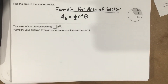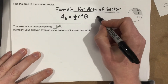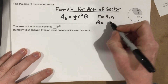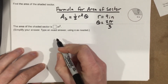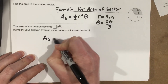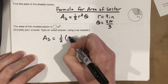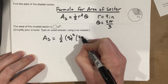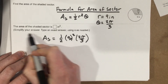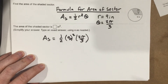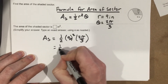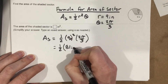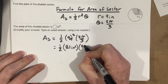So if we take one-half R squared theta and we go through and solve this problem, we can see that the radius here is 9 inches and our theta is 2π over 3. So the area of the sector equals one-half, times the radius 9 squared — which is in inches — times 2π over 3.